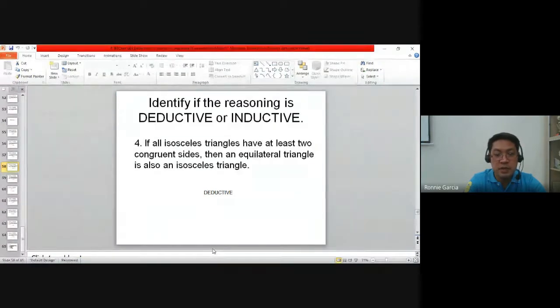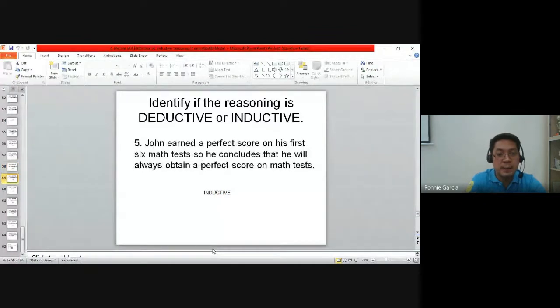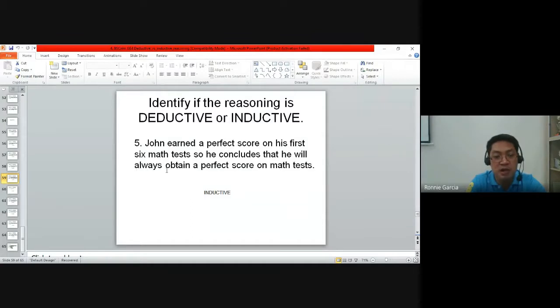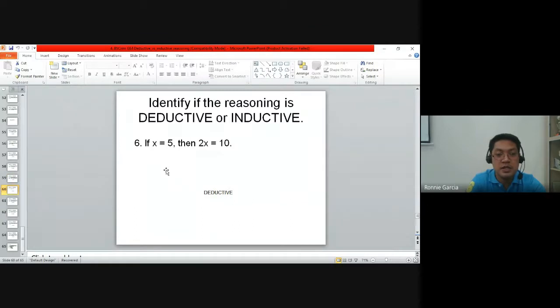Number five: John earned a perfect score on the first six math tests. Based on that, he concluded that he will always obtain a perfect score. That's inductive. It's based on his observation that in the first six tests he was perfect, so he generalized that he will always obtain a perfect score. That is inductive.